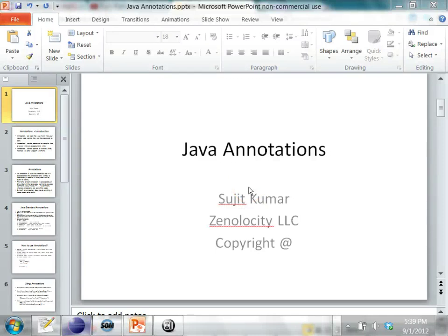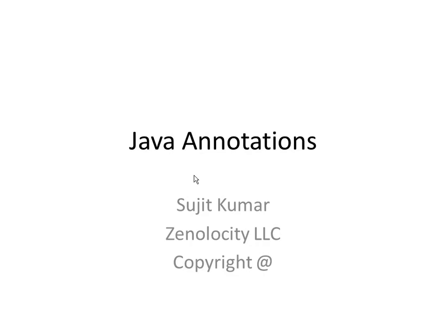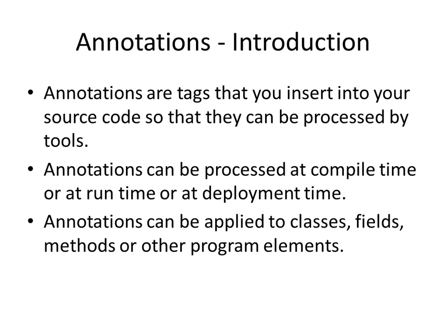In this class, we'll talk about annotations in Java. Java provides the concept of annotations starting from JDK 1.5. Annotations are nothing but tags or labels that you put in your source code so that these tags are processed by certain tools. The tools could be your compiler, a deployment tool, or some package which is used at runtime.